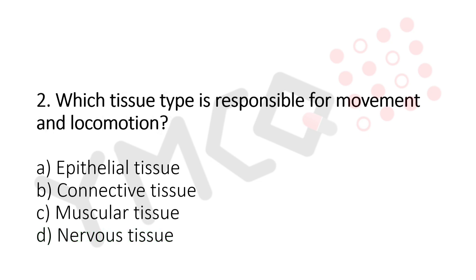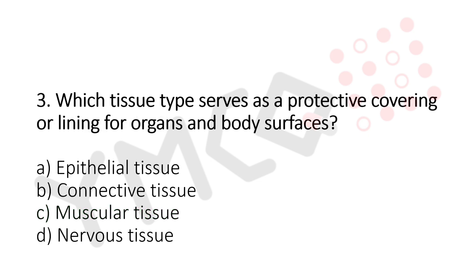Question 2: Which type of tissue is responsible for movement and locomotion? Option A: epithelial. Option B: connective. Option C: muscular. Option D: nerve tissue. Question 3: Which type serves as a protective covering or lining for organs and body surfaces? Option A: epithelial tissue. Option B: connective tissue. Option C: muscular tissue. Option D: nervous tissue. The answer is Option A, epithelial tissue.